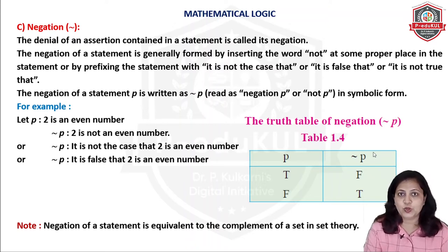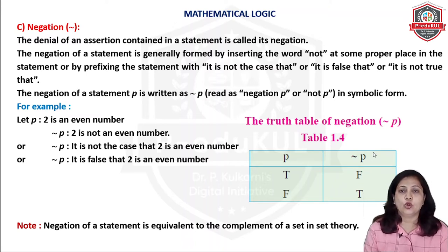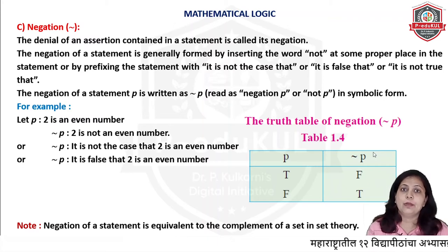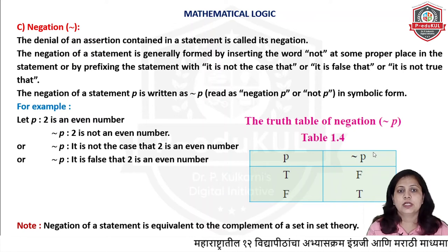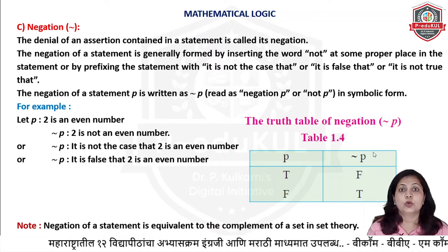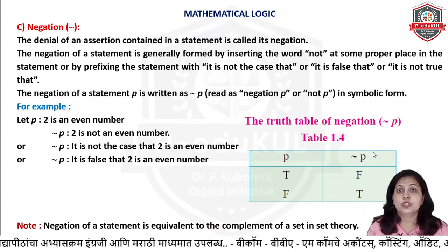Using opposite words to show negativity is done in English language. In maths, what will we do? We will use 'not', or we will say 'it is false that'. So how will we frame the sentence? 'It is false that 2 is an even number.' Another example: '2 is a prime number.' Its negation will be '2 is not a prime number.' We will not say '2 is a composite number', because we are not going to use opposite words.